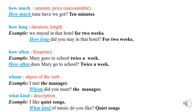'How long' is for duration or length. Example: We stayed in that hotel for two weeks. You see, it is the duration. How long did you stay in that hotel? For two weeks.